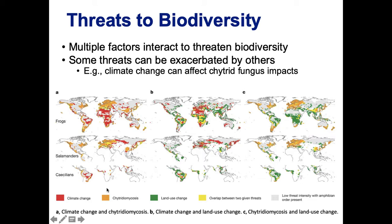The red shows species negatively impacted by climate change, the orange shows species negatively impacted by chytridiomycosis — the fungal disease that has been causing amphibian extinctions — and the yellow shows the overlap between those two threats. You can see small dots of yellow in Europe and a little bit in Asia.